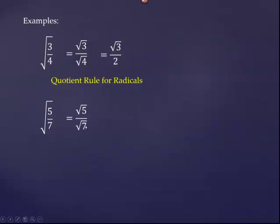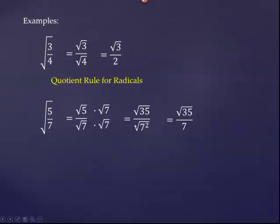We know that if we had a perfect square in the radicand, then we could take the square root of it. How could we get a perfect square in the radicand? Well, the simplest thing we could do is multiply by the square root of seven, because the square root of seven times the square root of seven gives us the square root of seven squared, which equals seven. Since this is a fraction, if we multiply the denominator by the square root of seven, we also need to multiply the numerator by the square root of seven. In the numerator we get the square root of five times the square root of seven, which is the square root of 35. In the denominator we have the square root of seven squared — the index and the power undo each other — giving us seven.